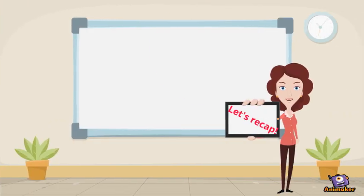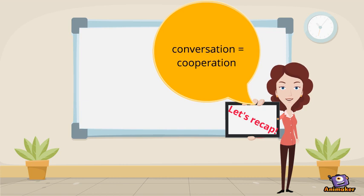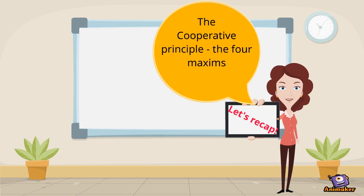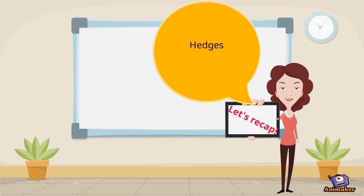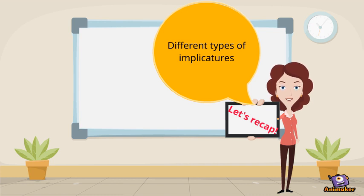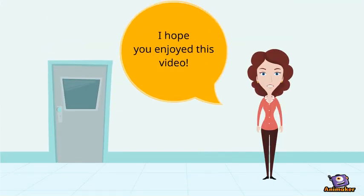So let's have a short recap of what we've learned today. We started with conversation being a cooperation and underlying the cooperative principle. The cooperative principle consists of the four maxims: quantity, quality, relation, and manner. Next, we talked about hedges — little words indicating the evidence or truth of a statement according to the four maxims. A major part of this tutorial consisted of the six different types of implicatures: conversational, generalized conversational, scalar, particularized conversational, properties of conversational implicatures, and last but not least, conventional implicatures. I hope you enjoyed this video and see you soon.